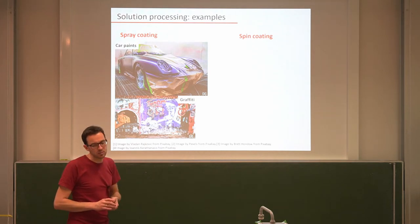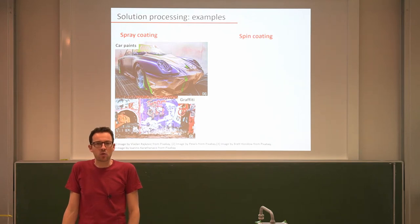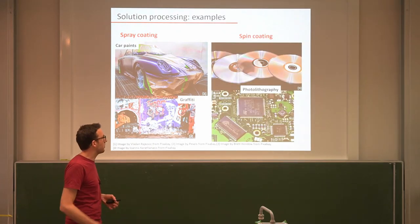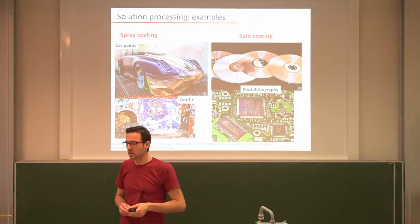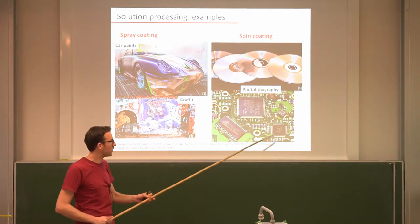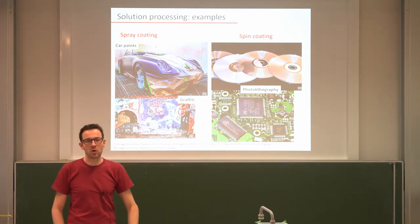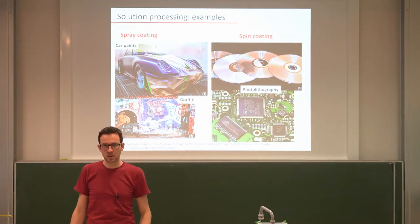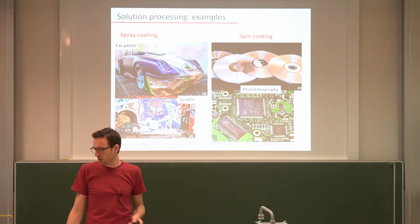Spin coating is a really important process for photolithography, which I'll discuss in more detail shortly. It forms the basis for making CDs, DVDs, Blu-rays, and semiconductor chips. Whatever powers your cell phone, laptop, or other devices is made by photolithography. Polymers play a very fundamental role as the first step in the development of such devices.